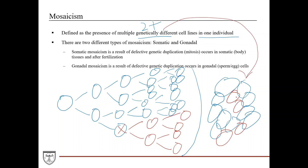There are two different types of mosaicism: somatic and gonadal — essentially defined by the type of cell in which it occurs. Somatic mosaicism is a result of defective genetic duplication, or mitosis, that occurs in somatic tissues after fertilization. This could happen during embryogenesis or over a lifespan — for example, if someone is exposed to a carcinogen that causes DNA damage, a mutation, and a genetically different cell line is generated within one individual.